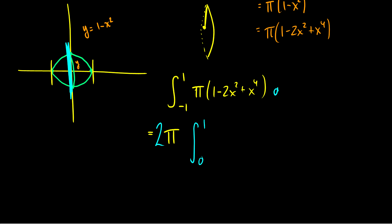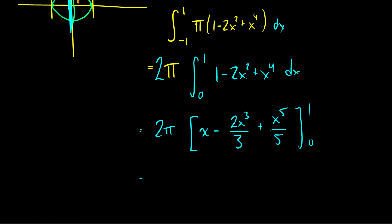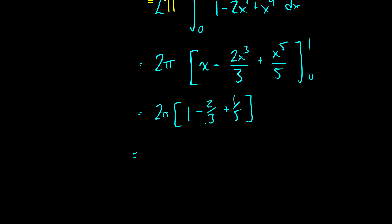We need the antiderivative of 1 minus 2x squared plus x to the fourth. This equals 2 pi times: antiderivative of 1 is x, antiderivative of 2x squared is 2x cubed over 3, antiderivative of x to the 4th is x to the 5th over 5. Evaluating from 0 to 1 gives 2 pi times (1 minus 2/3 plus 1/5). That is 1 minus 2/3 equals 1/3, and 1/3 plus 1/5 equals 5/15 plus 3/15 equals 8/15. So we get 2 pi times 8/15, which equals 16 pi over 15.